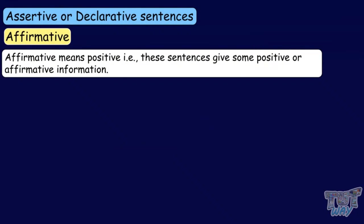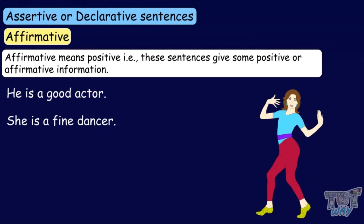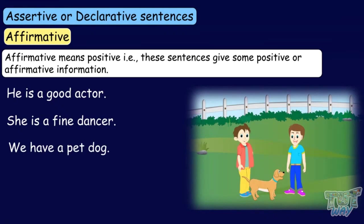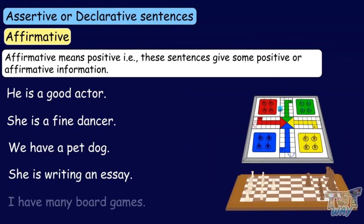Affirmative means positive — these sentences give some positive or affirmative information about something or someone. For example: He is a good actor. She is a fine dancer. We have a pet dog. She is writing an essay. I have many board games. All these sentences give some positive information, so they are called affirmative statements.